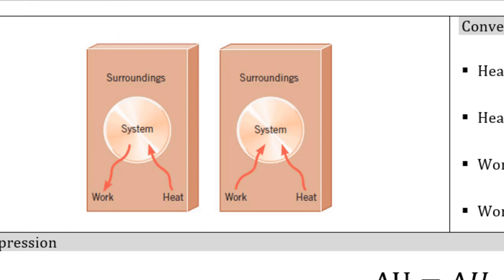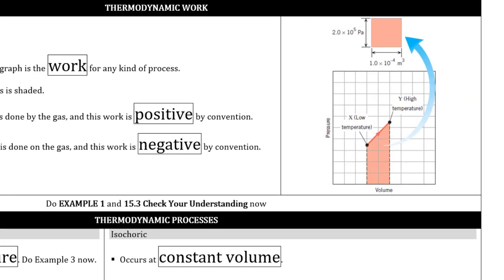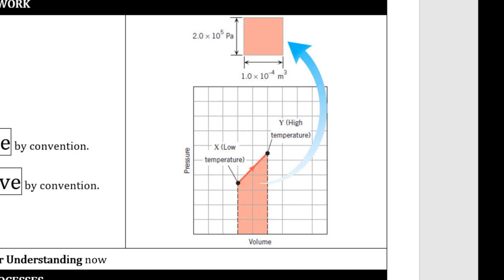Looking at the box on the right: heat flowing into the system tends to increase internal energy, and if the surroundings are doing work on the system, that also increases internal energy. In this case, both heat and work drive up the system's internal energy, and the net change is an increase. As far as exploiting thermodynamics for the benefit of humankind, the goal is to get heat flow to do work for us as it's flowing. From a graphical perspective, if you plot pressure versus volume, the area under the PV curve represents the work done during that process — so the goal is to get the largest possible shaded area on a PV graph.